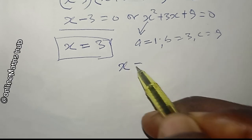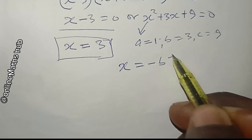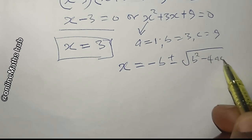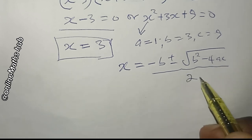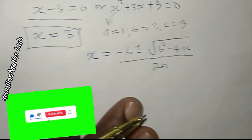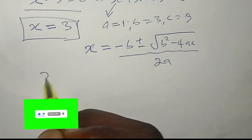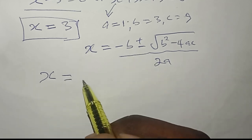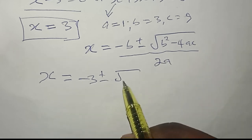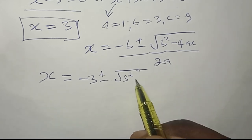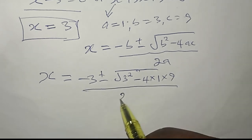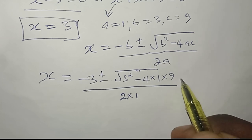Putting it into the formula x = (−b ± √(b² − 4ac)) / 2a, and substituting the values: x = (−3 ± √(3² − 4·1·9)) / (2·1), which simplifies to x = (−3 ± √(9 − 36)) / 2.